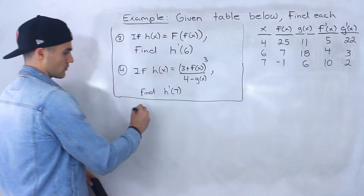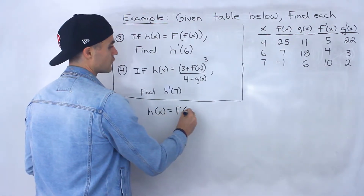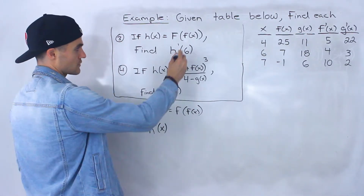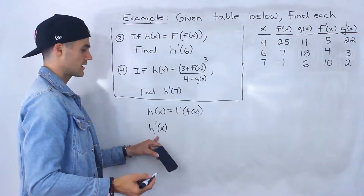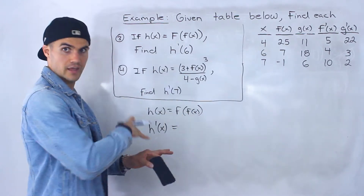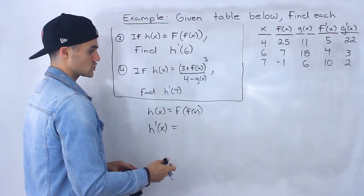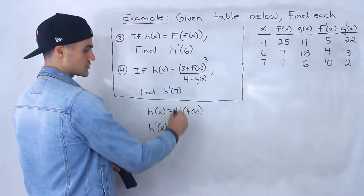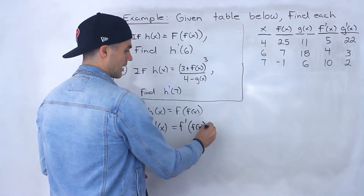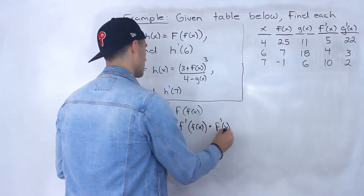So number 3: we have h of x equals f of f of x. This one's actually not bad. They're asking for h prime of 6, so let's find an expression for h prime of x first. Notice we have a function f of x within another function f — even though they're the same, it's still a composite function, so we still use the chain rule. We take the derivative of the outside, which is f prime, keep the inside the same, and then multiply by the derivative of the inside function, which is f prime of x.